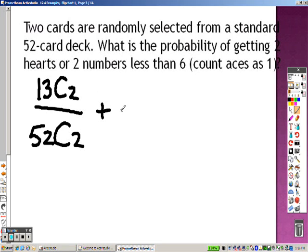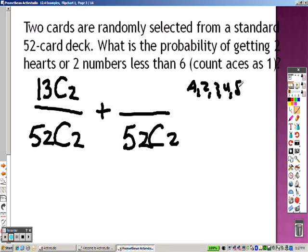Okay, plus because it's or. The next one, the total is there's 52 cards, and you're choosing two. So no problem. So two cards are less than six, and that's an ace, two, three, four, and a five. So it's one, two, three, four, five. Five times four, because there's four suits, is 20. Okay, but it's not 20C2.